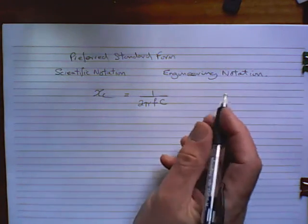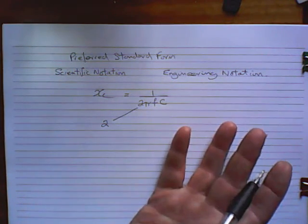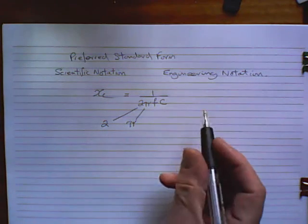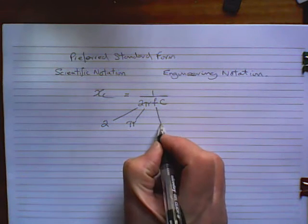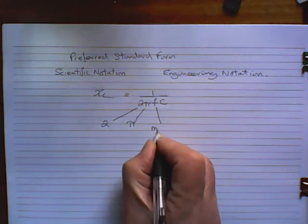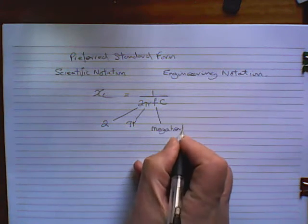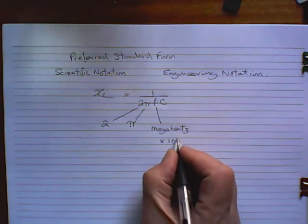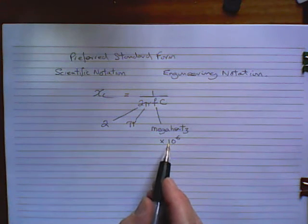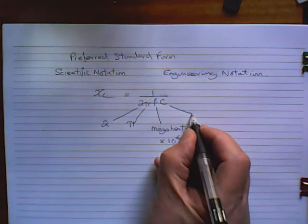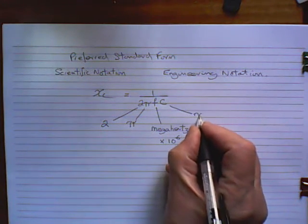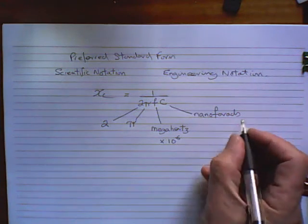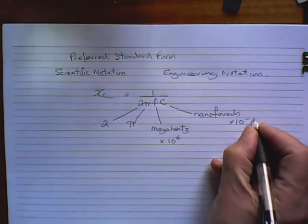which is capacitance. However, from your point of view at the moment, it doesn't really matter what this is. But the point is that 2 is a number you're already familiar with. This is pi — you'll find it on your calculator, or 3.142 if you want. But F, in this particular equation, could be in megahertz — that is to say, some number times 10 to the power of 6. And the capacitance could be in something called nanofarads. Nano is something times 10 to the minus 9.